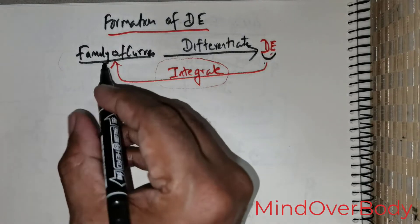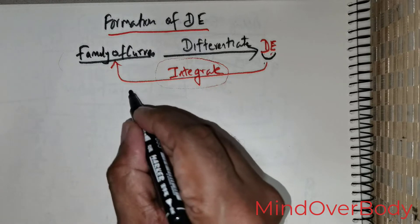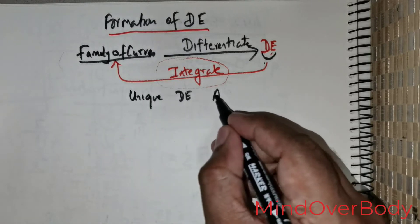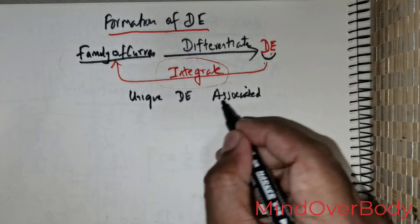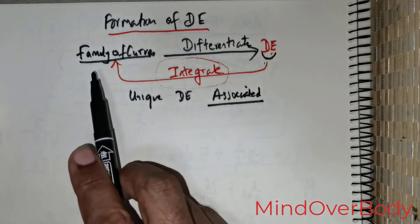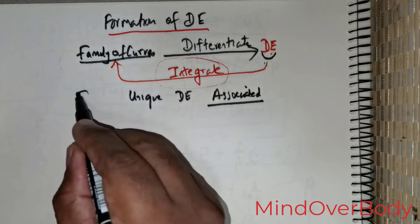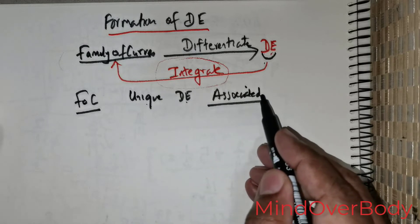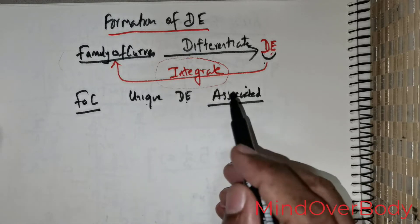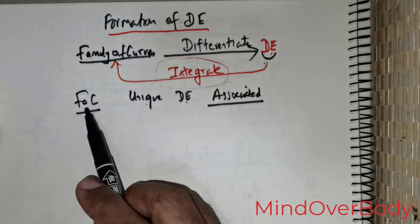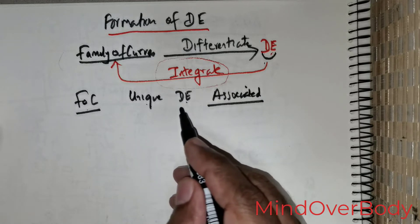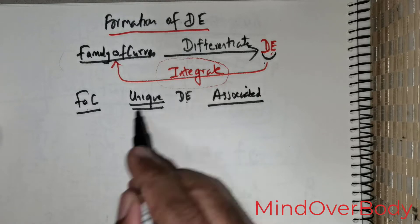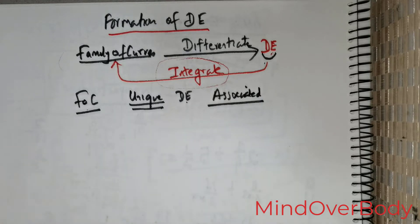It is imperative to understand that every family of curves has a unique differential equation associated with it. Every family of curves has a unique differential equation associated with it — in other words, no two families of curves will share a differential equation. Unique is a very important keyword that you will have to take into account.